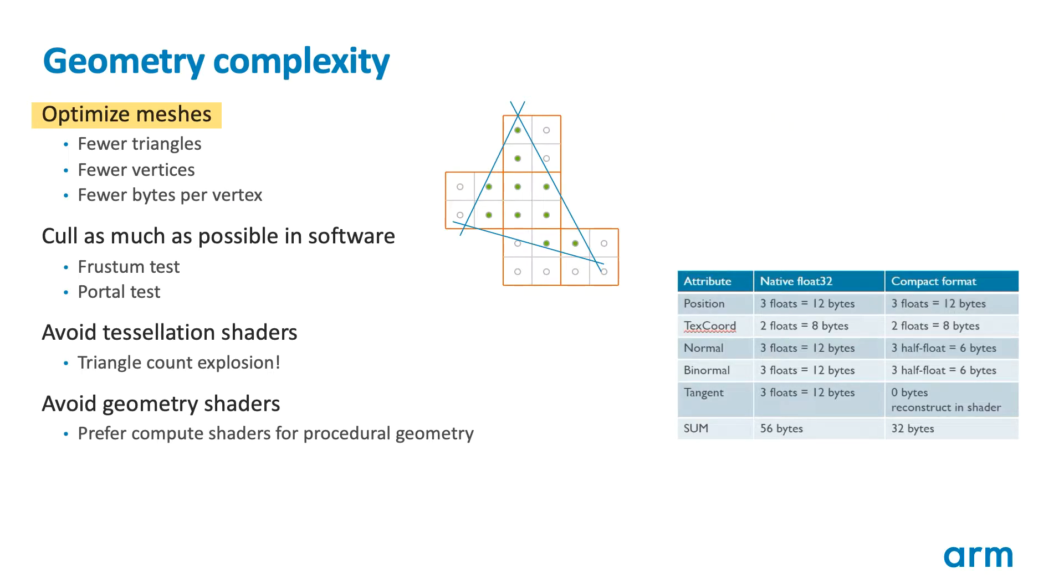Once triangle count is under control, the next task is optimizing the vertex connectivity to minimize the number of vertices. Use index draws to maximize the reuse of vertices across triangles, and ensure that your index buffers have good spatial and temporal locality to minimize any reshading. A well-encoded mesh with good reuse can often share a single vertex across five or six triangles, so the average number of vertices per triangle should be well under one for most meshes.